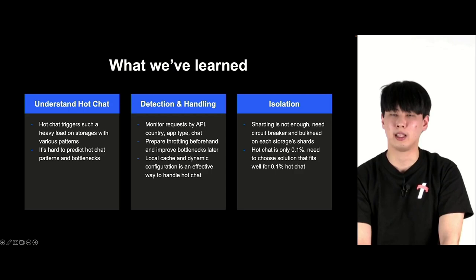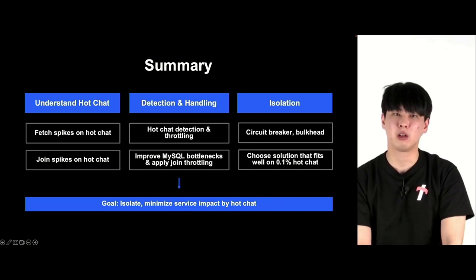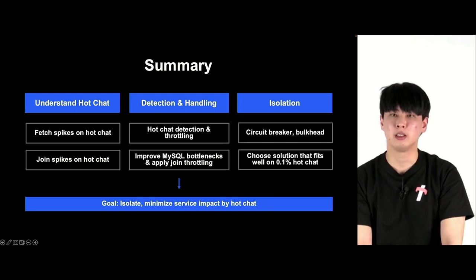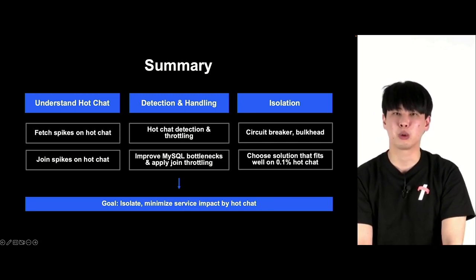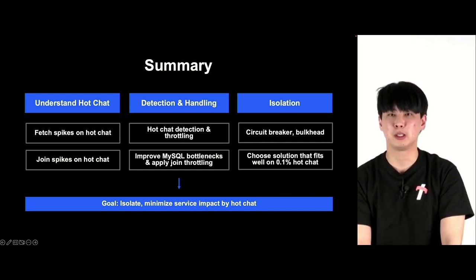This is a one-slide summary. We experienced hot chat patterns coming from fetch event API request surges and increases in join requests. We looked at the issues and how to solve the bottlenecks. These could be solved with hot chat detection and throttling, MySQL performance improvement, and join throttling. We also introduced circuit breaker and bulkhead. In coming up with the solution, we tried to select targeted approaches that account for the 0.1% of total chats, being very effective in isolating and minimizing the impact of hot chats.